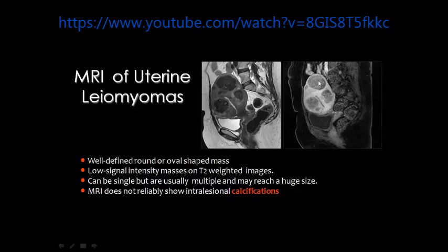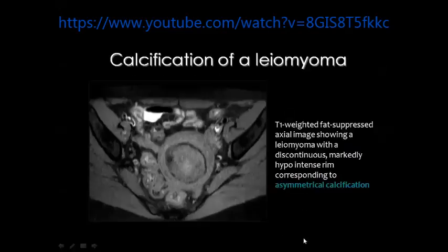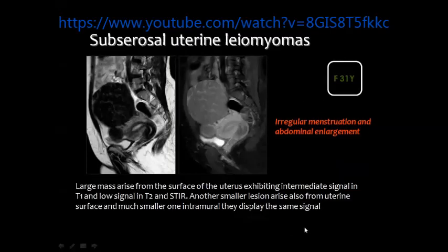The body of the uterus is large and the uterine fibroids appear less enhancing compared to the myometrium. Sometimes when calcification is prominent it can appear on MR images — here the low-signal rim and low-signal dots represent dystrophic calcification within the fibroid. This is an example of a large fibroid in the fundus of the uterus and a smaller one nearby — both lesions show dark signal on T2 and show some enhancement after intravenous contrast injection.